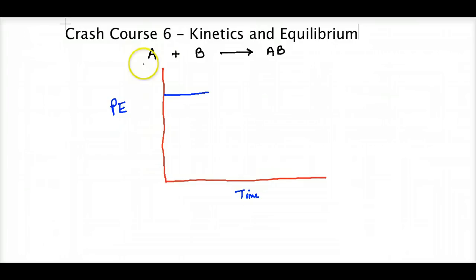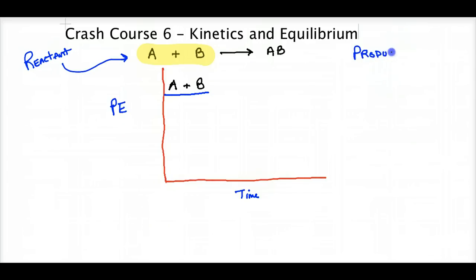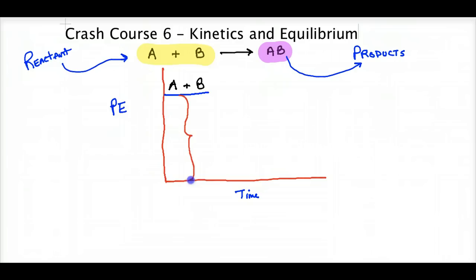It's a synthesis reaction — individual elements forming something, or a redox reaction. What we have here is the energy that A and B already have: the potential energy of the reactants. This side of the equation is the reactant side — the chemicals that react to form the products. That line of potential energy represents how much potential energy the reactants have. We'll call it 100 joules.